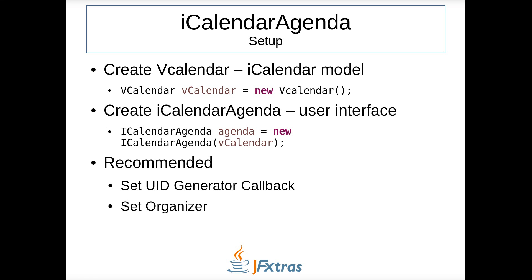I will show the steps to set up iCalendar Agenda. First, you need to create a VCalendar object, the top-level calendar object from iCalendarFX. Second, you create an iCalendar Agenda by passing the VCalendar in the constructor. There are some recommended optional properties to set. The UID generator callback can be changed to provide custom UID values; the default applies a string containing the date, a counter, and jfxtras.org. The organizer should also be changed to contain the common name and email address of the Agenda user. All created events have the organizer property.